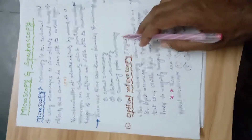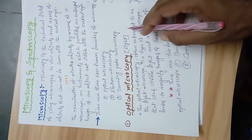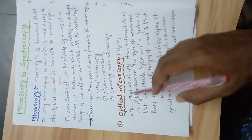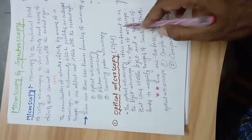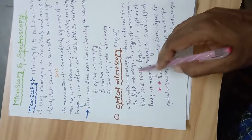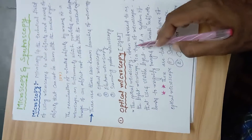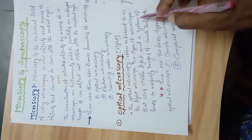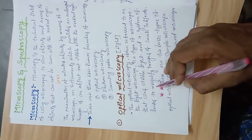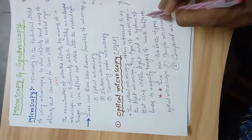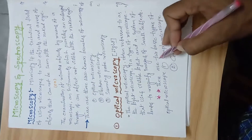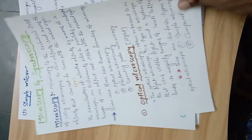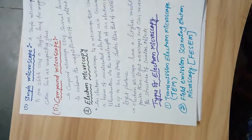The first branch is optical microscopy, also called light microscopy. Optical microscopy, often referred to as light microscopy, is a type of microscopy that uses visible light and a system of lenses to magnify images of small objects. Optical microscopy is basically of two types: simple microscopy and compound microscopy.